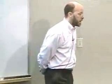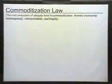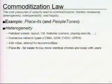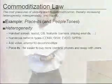The second law is the commoditization law. It says the cost pressures of ubiquity lead to commoditization, thereby increasing heterogeneity, interoperability, and fragility. For it to be everywhere and everyone to have it, it has to be cheap, and that means commoditization — manufacturing these things in incredible quantities with incredible compromises. Think about how many dropped phone calls we experience. That's because it's cheap.